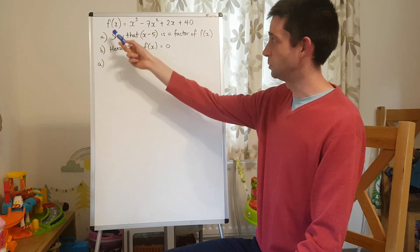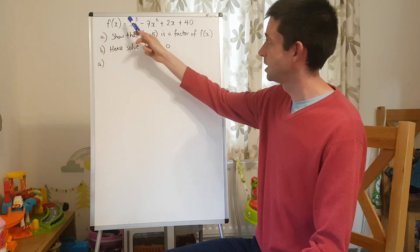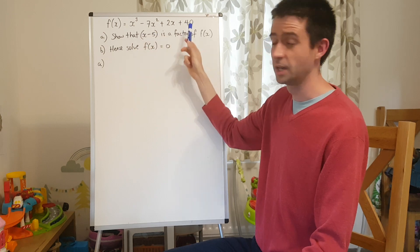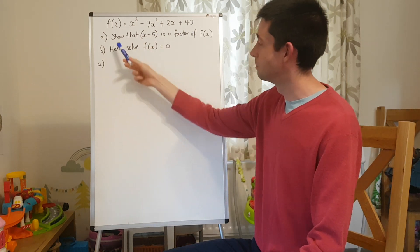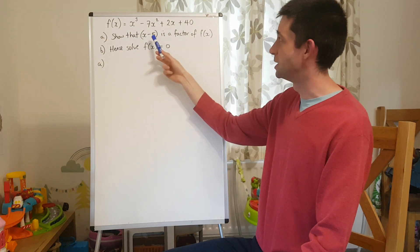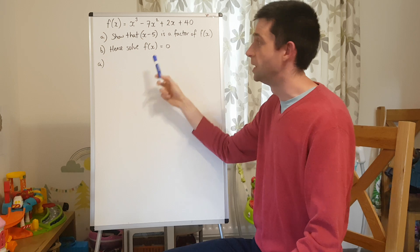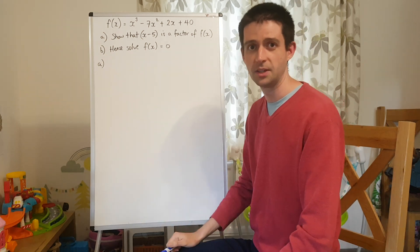So, the question we have here is, we have f of x, a function of x, equals x cubed minus 7x squared plus 2x plus 40. We're being asked to do two things. In part A we're being asked to show that x minus 5 is a factor of f of x, and then in part B we're being asked to hence solve f of x equals 0.